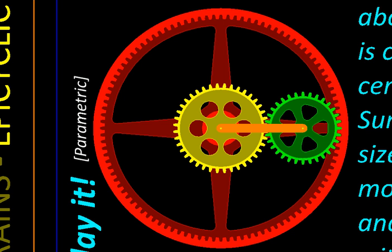Epicyclic gear trains have more than one degree of freedom. That means we'll be able to choose more than one input independently. Let me show you how.